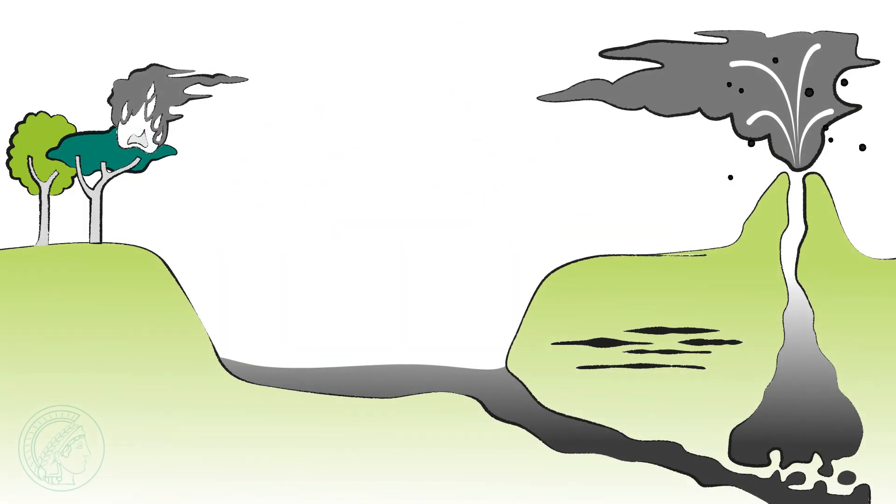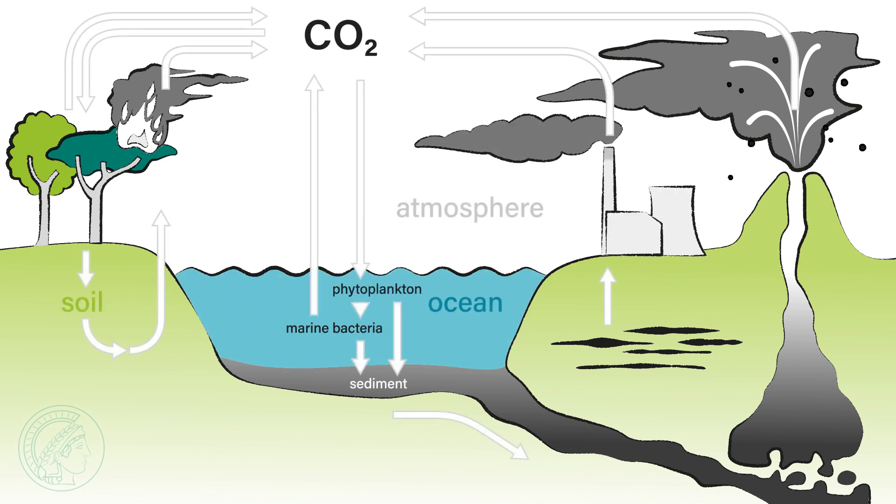Accurate climate models require precise information on global CO2 cycles. The oceans play an important role here. They act as both CO2 sources and CO2 sinks.